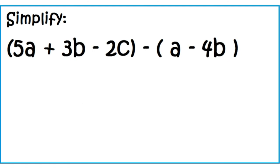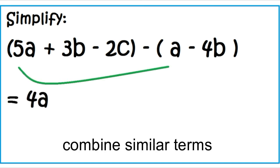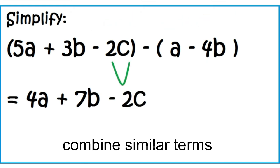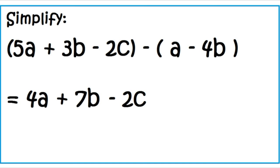Simplify: the quantity 5A plus 3B minus 2C minus the quantity A minus 4B. 5A minus A is 4A. 3B minus negative 4B is 7B. Since 2C has no similar term, just copy 2C. The answer is 4A plus 7B minus 2C.